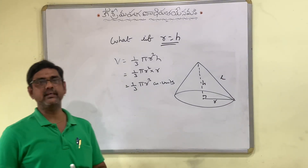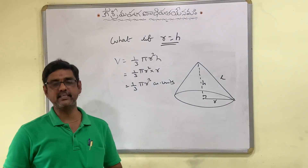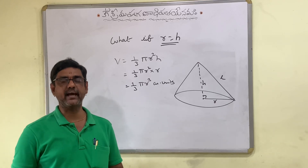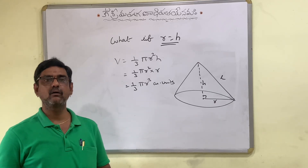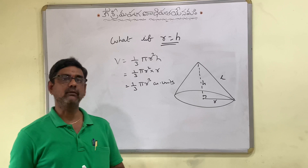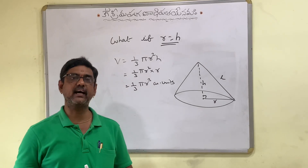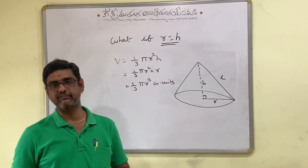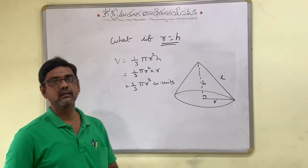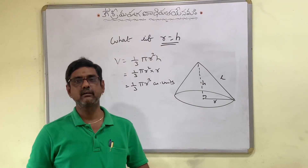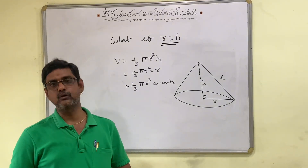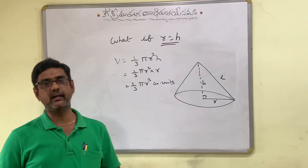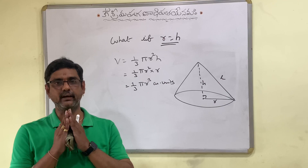So children, I think you have observed the different special cases of different objects like cuboid, cylinder, and cone, and how their surface areas and volumes change when L is equal to B in the case of cuboid, and R is equal to H in the case of cylinder and cone. I think you like this video. Kindly subscribe my channel and share my videos. Thank you.